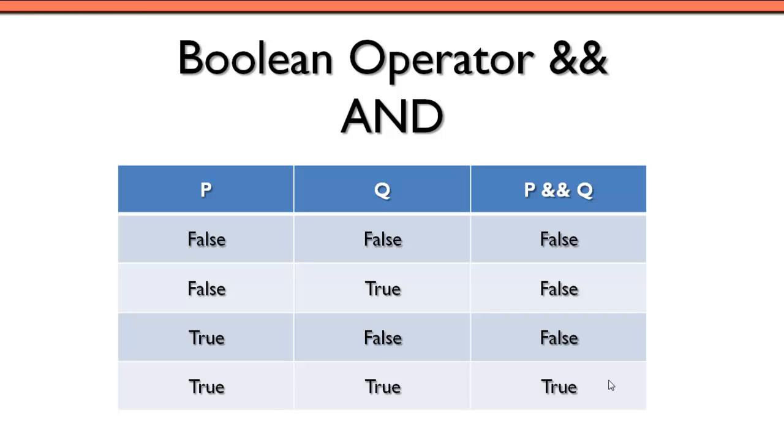So that's basically it. The Boolean operator, double ampersand. We have to have both operands, both sides, P and Q being true in order for the whole expression to be true.